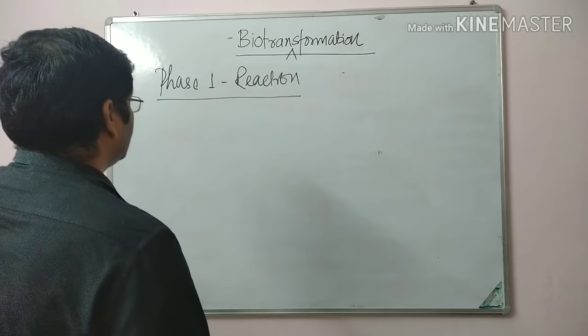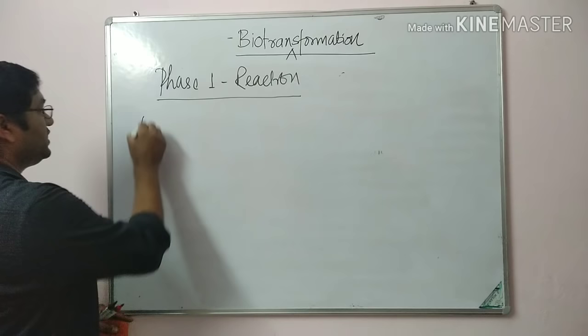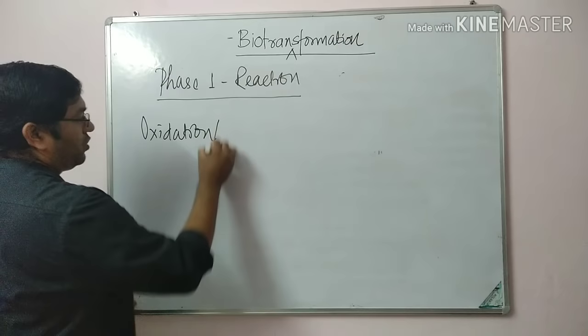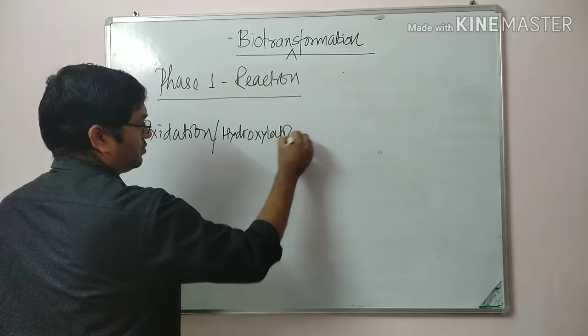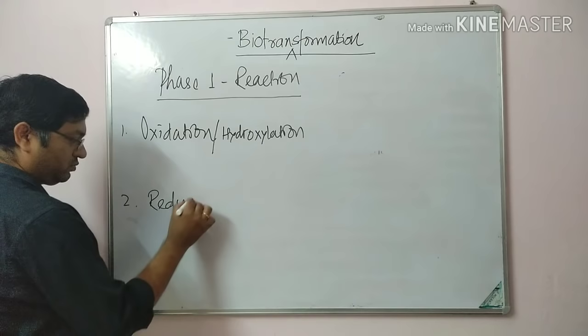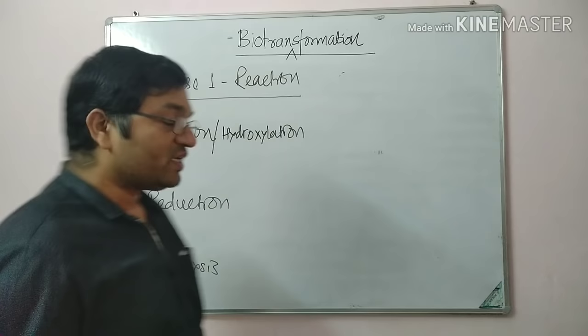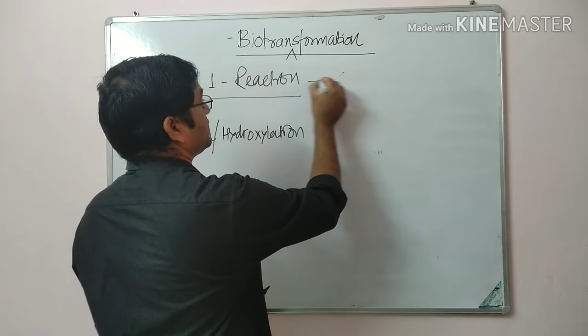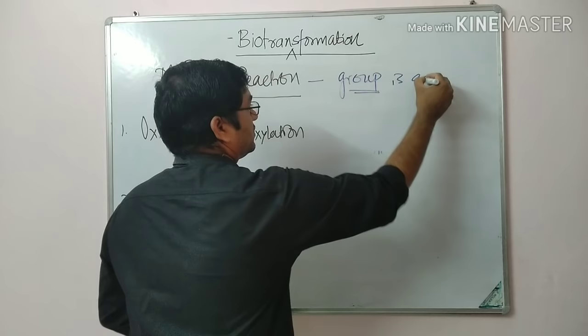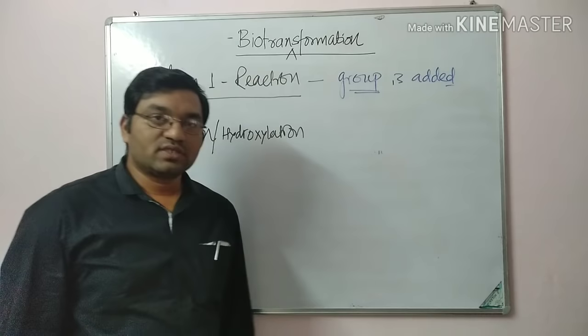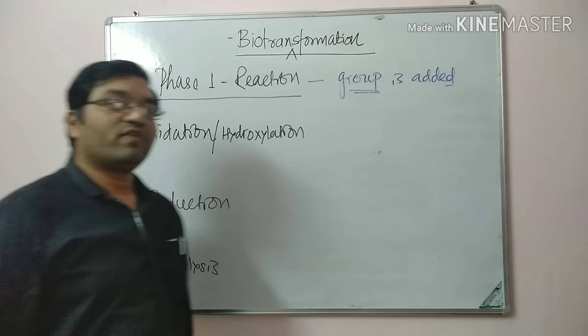Now, phase 1 reactions. There are three main phase 1 reactions: first is oxidation or hydroxylation, second is reduction, and third is hydrolysis. In phase 1 reactions, a functional group is added to the compound so that it becomes less toxic or water-soluble, or so it can be handed over to the phase 2 conjugation reactions.